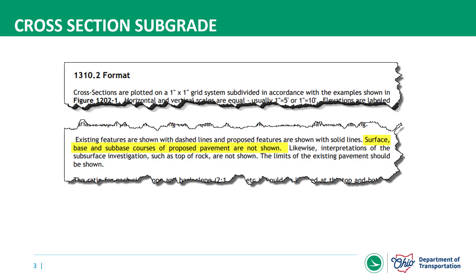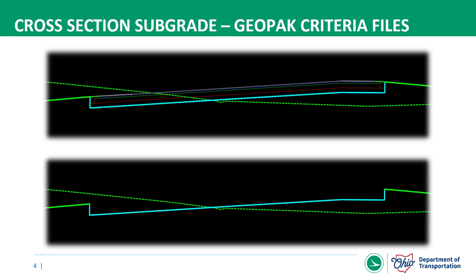Section 1310.2 of L&D Volume 3 for the cross-section format has always stated that surface, base, and sub-base courses of the proposed pavement are not shown on our cross-sections and our plans. This has not changed because of OpenRoads Designer. The GeoPack criteria used to draw the pavement buildup as defined in that criteria. Then for the plans production, the buildup levels would be turned off to only show the subgrade and the finished grade lines.